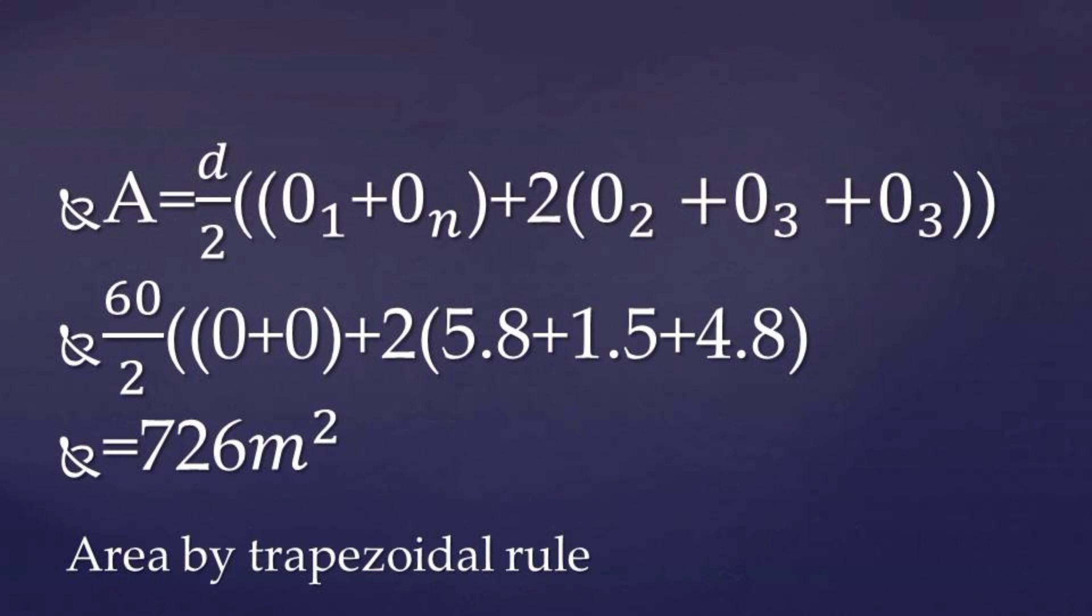So d will be the interval, so the distance interval there, that will be 60 meters divided by 2, into brackets our first offset is 0, our last offset is 0, plus 2 into brackets the remaining of our offsets as illustrated there. So our answer will be 726 meters square.